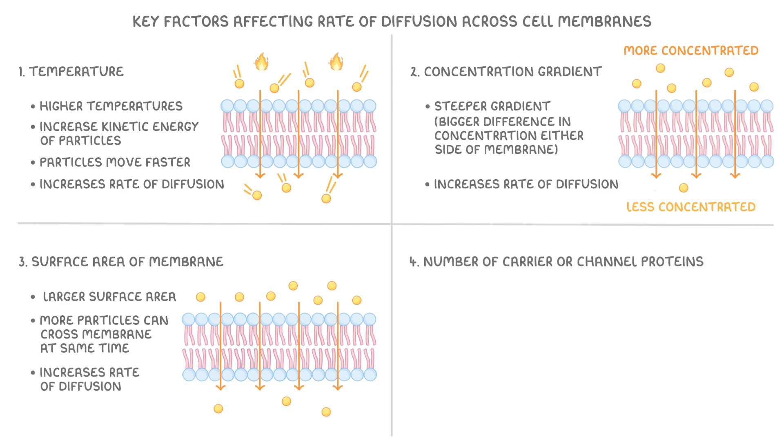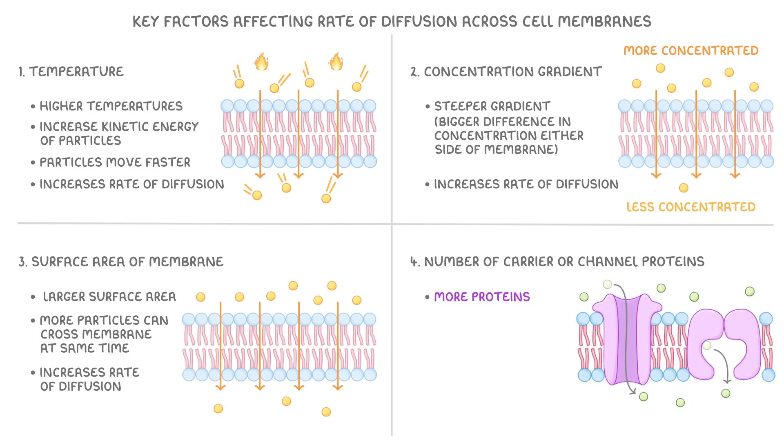And then lastly, the number of carrier or channel proteins can affect the rate of diffusion, because more proteins means there are more pathways for molecules to move through the cell membrane, and this increases the rate of facilitated diffusion specifically.